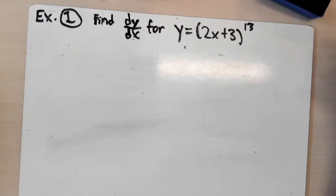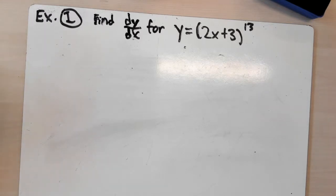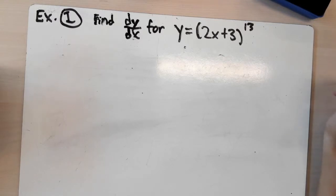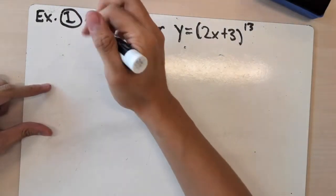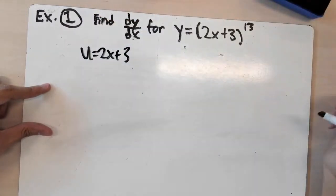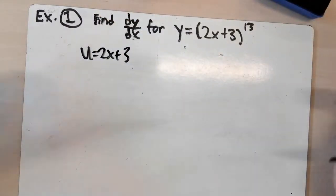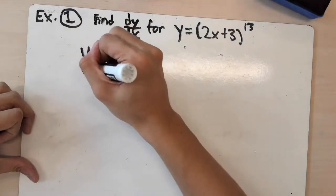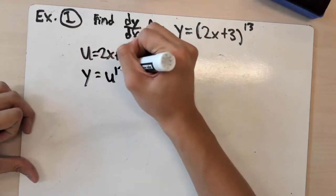Let's start with this problem: find the derivative of y equals (2x plus 3) to the 13th. You can pause the video and try it yourself. The strategy here is to break it down into two smaller functions. We have 2x plus 3, which is the inner function, so we let u equal 2x plus 3. And the outer function is y equals u to the 13th.